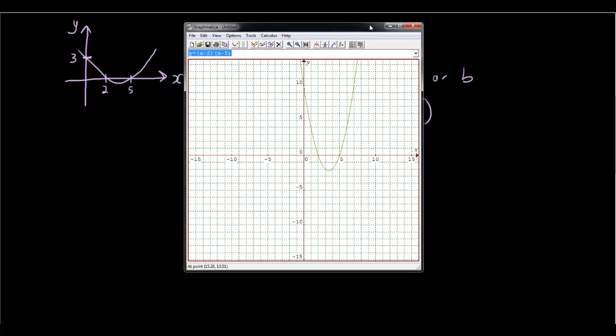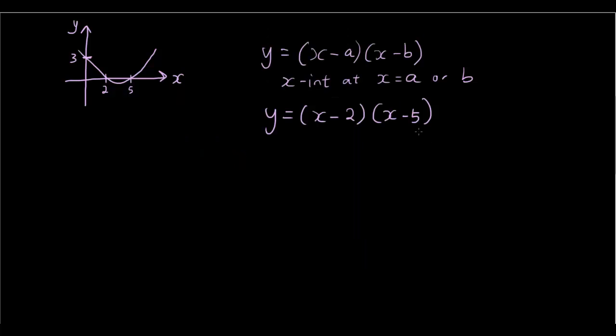but is that the graph we want? No, it's not, because we want the line to cross the y-axis at y equals 3. So we know we're getting close, but that is not the equation.